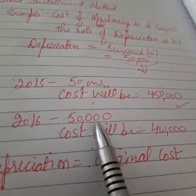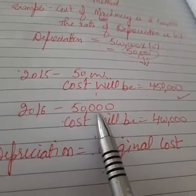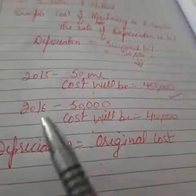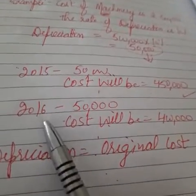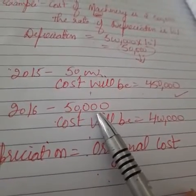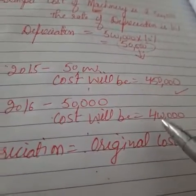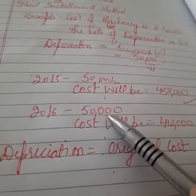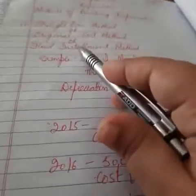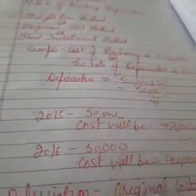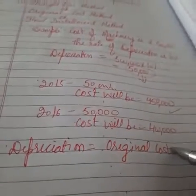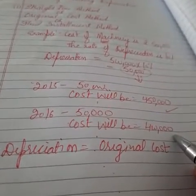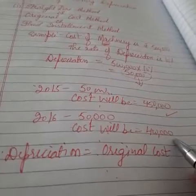In 2016, again we have to use the fixed amount of depreciation, that is 50,000. So the cost will reduce to 4 lakh. Even in the next year, in 2017, we will use 50,000 depreciation and the cost will reduce to 3 lakh 50,000. This is how we use this fixed amount of depreciation every year in the case of the straight line method.